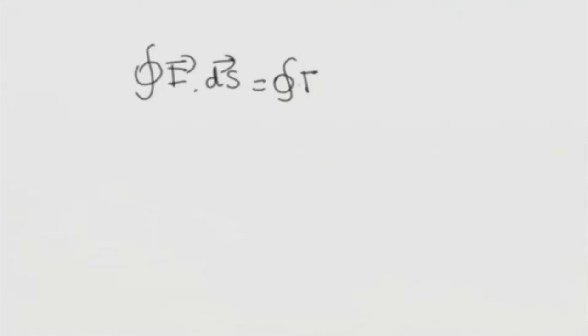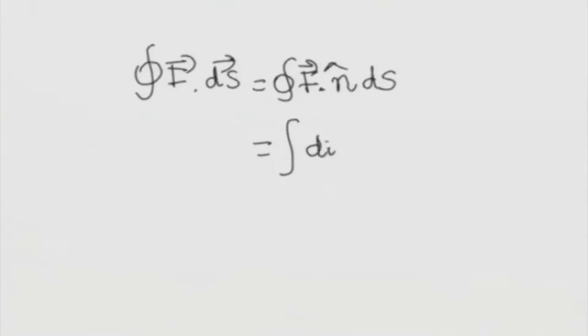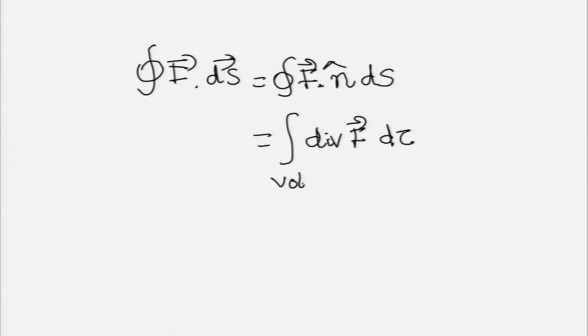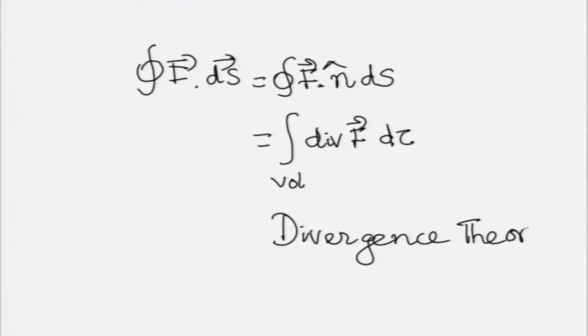This is the famous divergence theorem: the closed surface integral ∮ F·n̂ dS equals the volume integral ∫ (∇·F) dτ over the enclosed volume. It connects the surface integral of a vector field to the volume integral of its divergence. This is very important for the electromagnetic theory course.